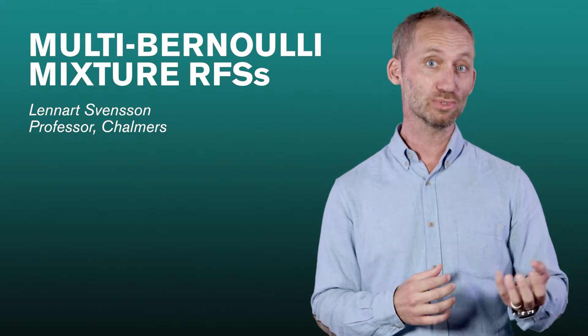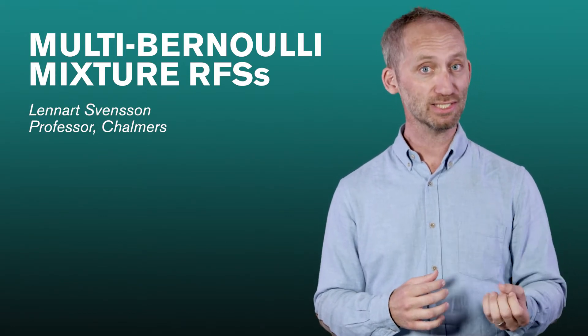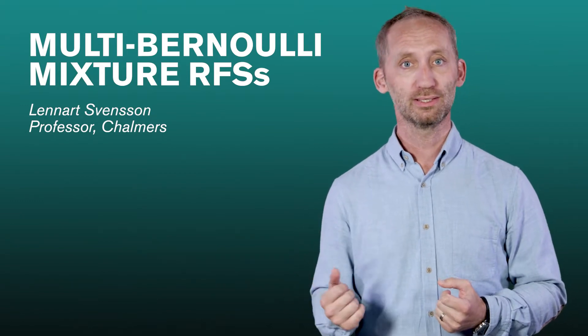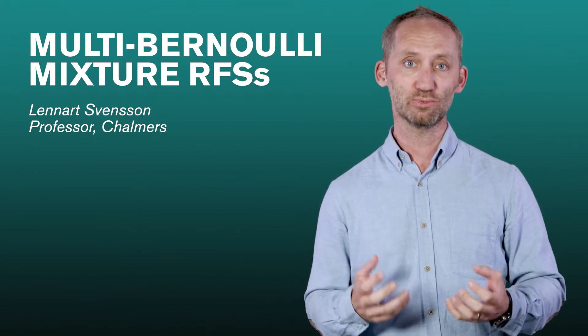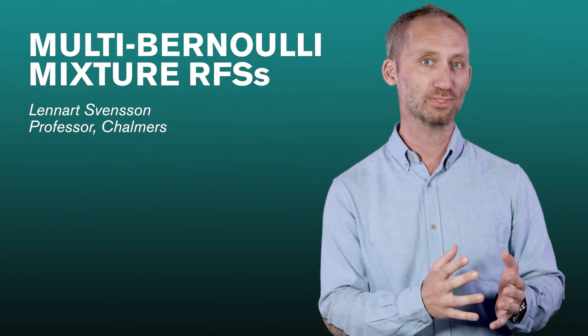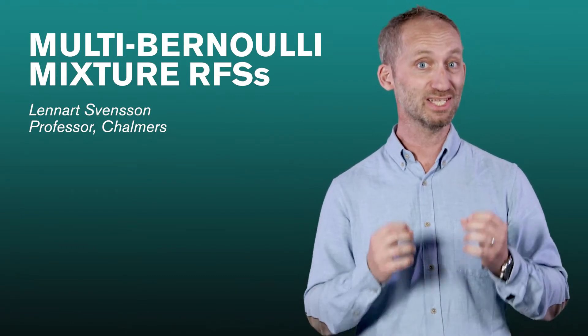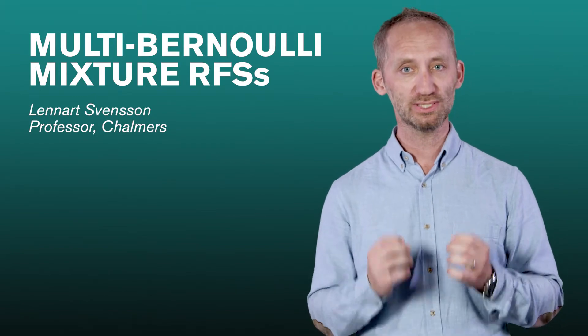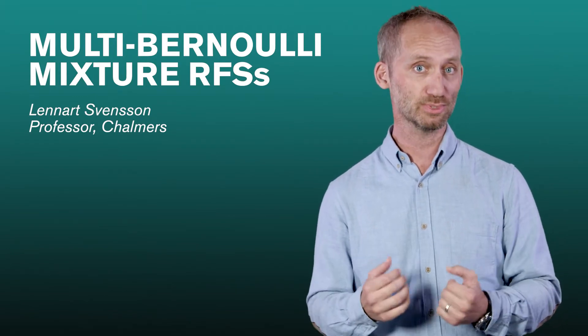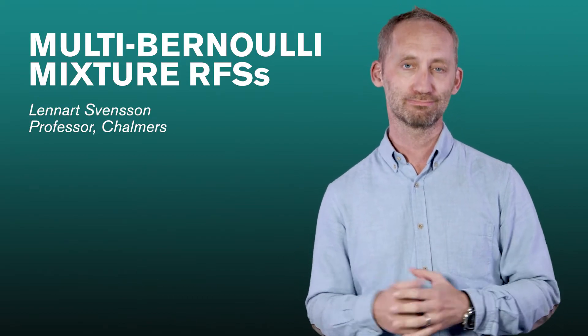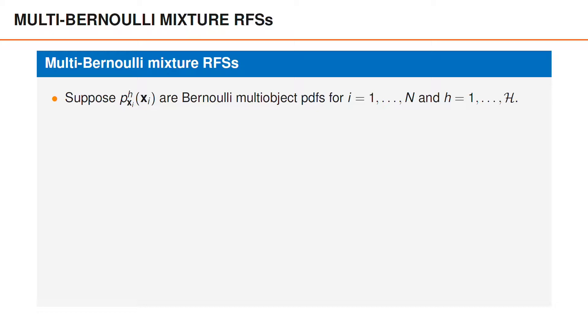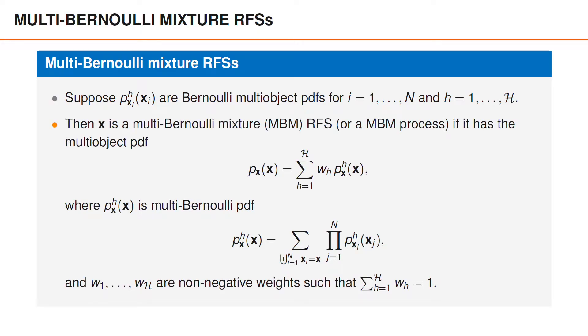The multi-Bernoulli mixture random finite set is an extension to the multi-Bernoulli random finite set that enables us to handle situations when we have multiple data association hypotheses. As such, it is also essential to several of the state-of-the-art multi-object tracking algorithms that Carl describes later in this course.